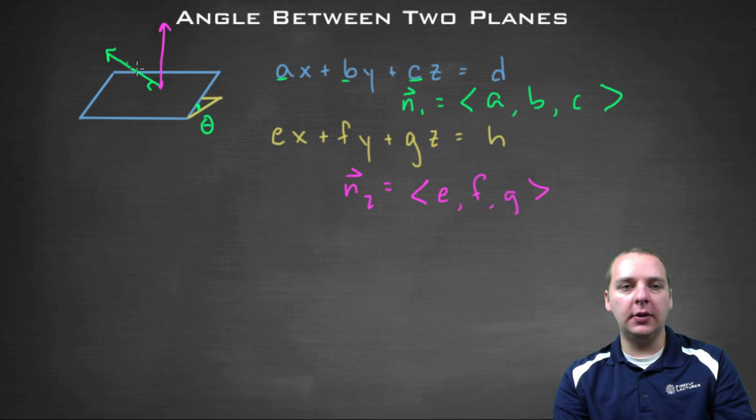And again, this one is N1, and this vector here is N2.